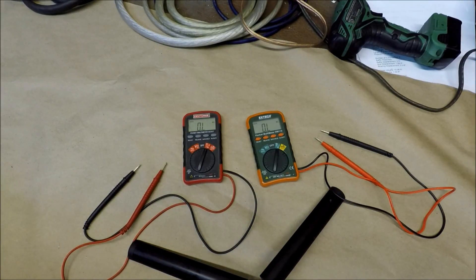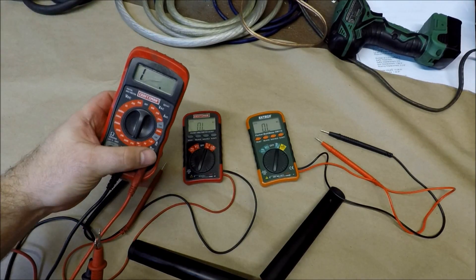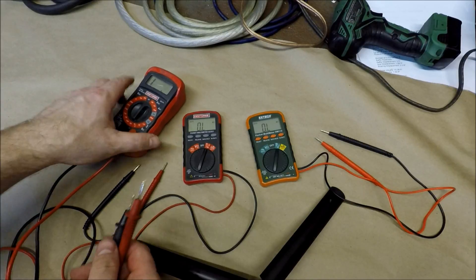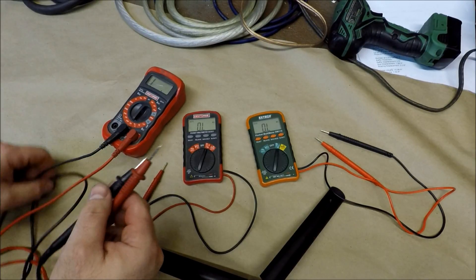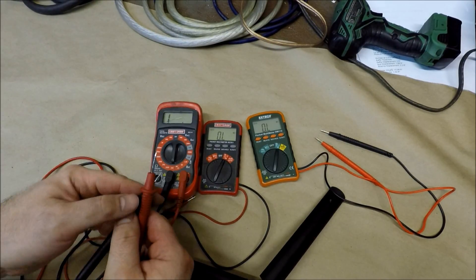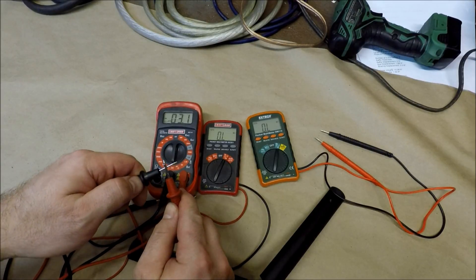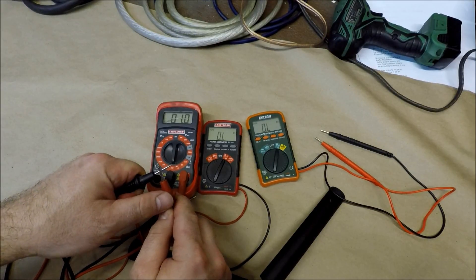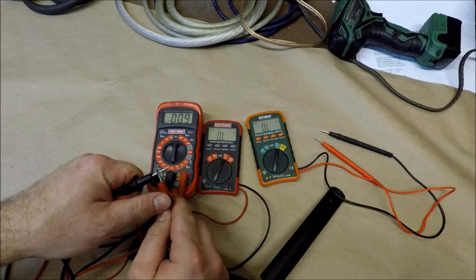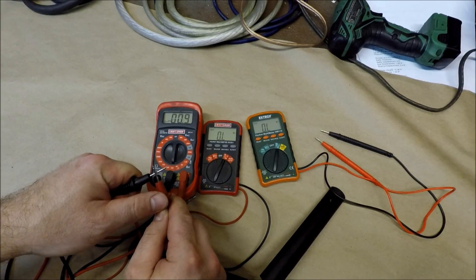Now I'll show you another example. Here's a different Craftsman we have and these work great as volt meters, but for reading impedance, they're not very good. So if we take this one and I touch these leads together, again, this impedance is all over the place.